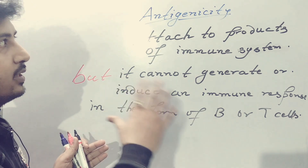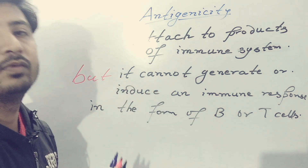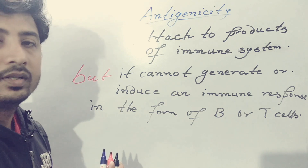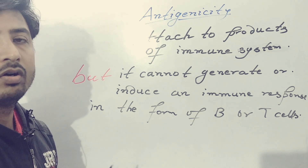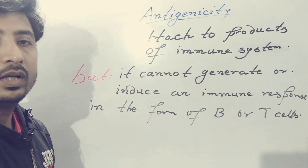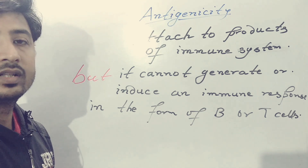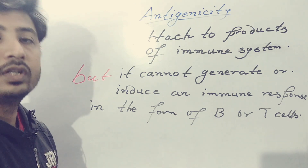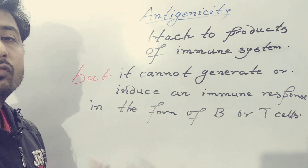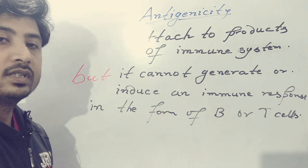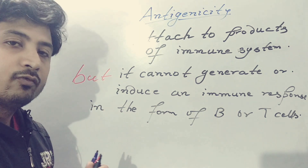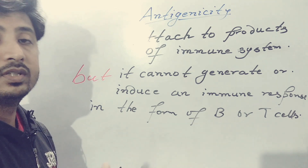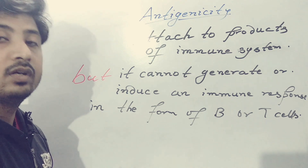From this total concept, antigenicity refers to the attachment to products of the immune system — that particular foreign antigen in case of antigenicity can bind to circulating cells or circulating antibodies somehow, but it will not generate a further enhanced specific directed response against that molecule. So you can conclude that any foreign molecule which can induce immunogenicity also has the property of antigenicity.